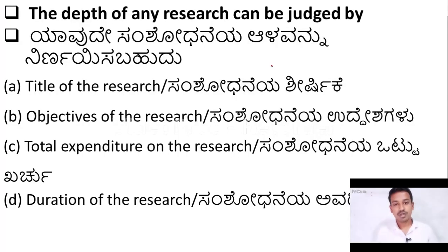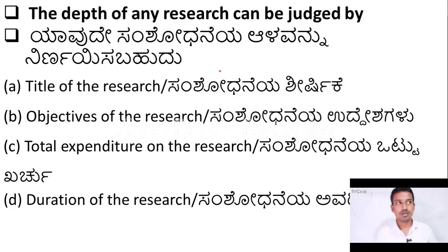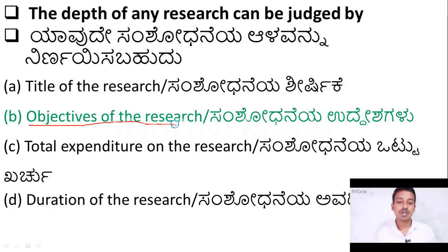The next question: the depth of any research can be judged by — option A: title of the research; option B: objectives of the research; option C: total expenditure on the research; option D: duration of the research. The right answer is option B — the depth of any research can be judged by its objectives.